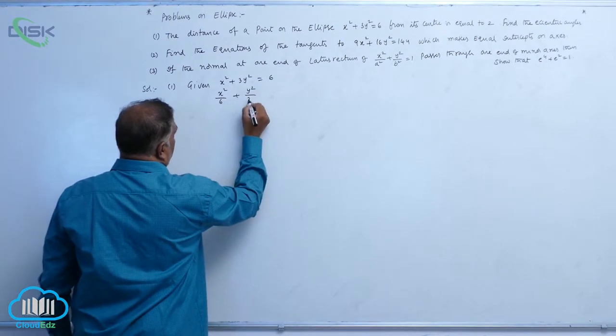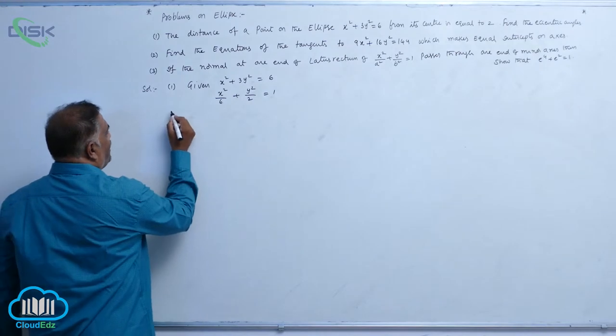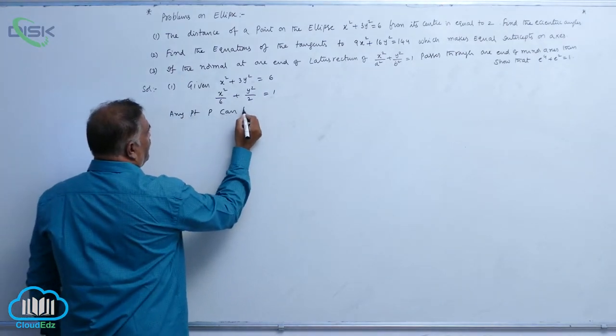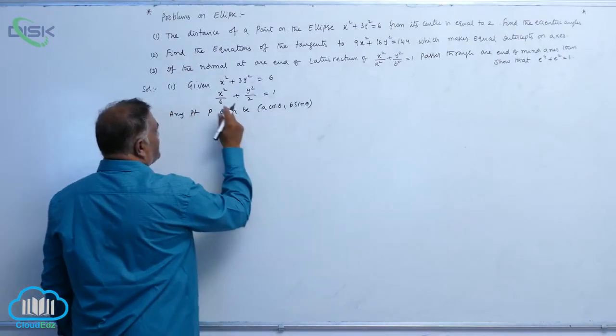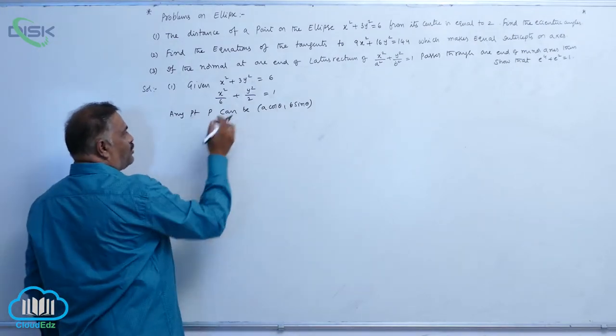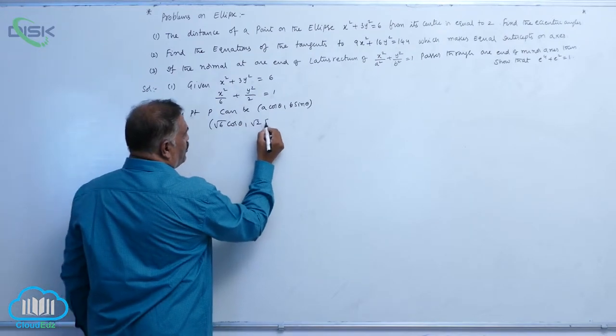Now any point P can be a cos theta comma b sin theta. So in place of a we are having root 6, b is root 2, so the point is root 6 cos theta comma root 2 sin theta.